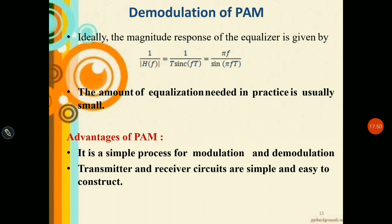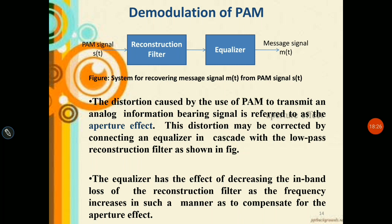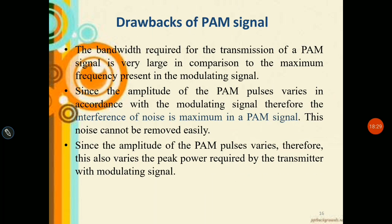Advantages of PAM: it is a simple process for modulation and demodulation — no complex circuitry or devices are required. The transmitter and receiver circuits are very simple and easy to construct. In modulation, only two FETs and a capacitor are needed; in demodulation, only a reconstruction filter and an equalizer are required.